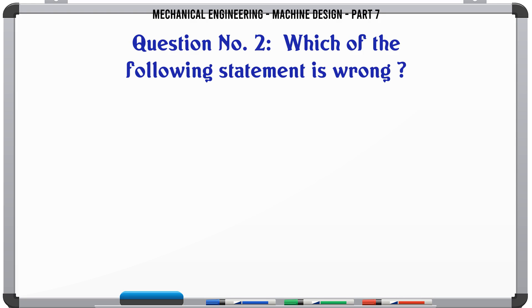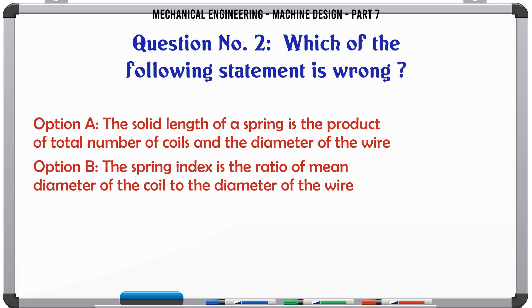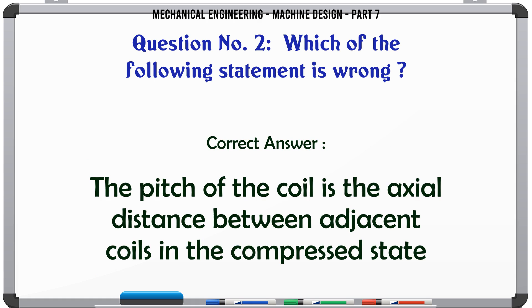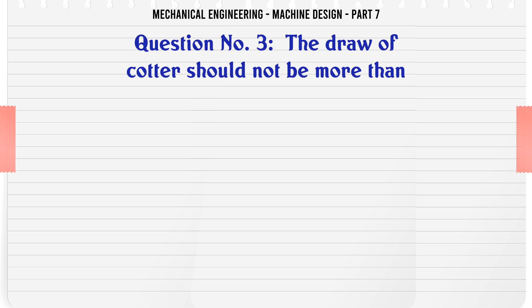Which of the following statement is wrong? a) Solid length of a spring is the product of total number of coils and the diameter of the wire. b) The spring index is the ratio of mean diameter of the coil to the diameter of the wire. c) The spring stiffness is the load required per unit deflection of the spring. d) The pitch of the coil is the axial distance between adjacent coils in the compressed state. The correct answer is: the pitch of the coil is the axial distance between adjacent coils in the compressed state.